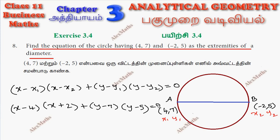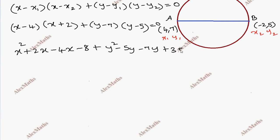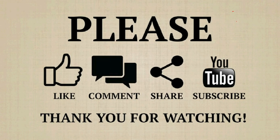Expanding: x² + 2x - 4x - 8 + y² - 5y - 7y + 35 = 0. Simplifying, this gives x² + y² - 2x - 12y + 27 = 0.